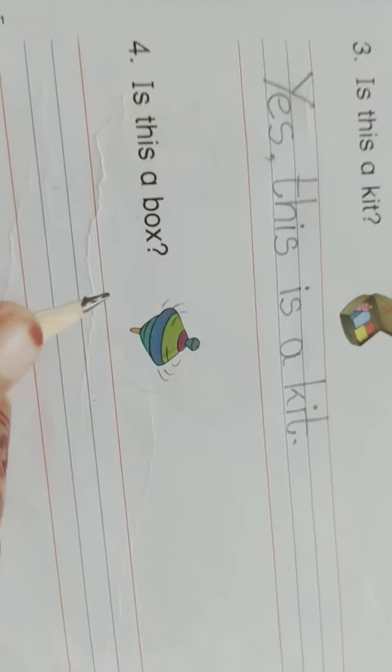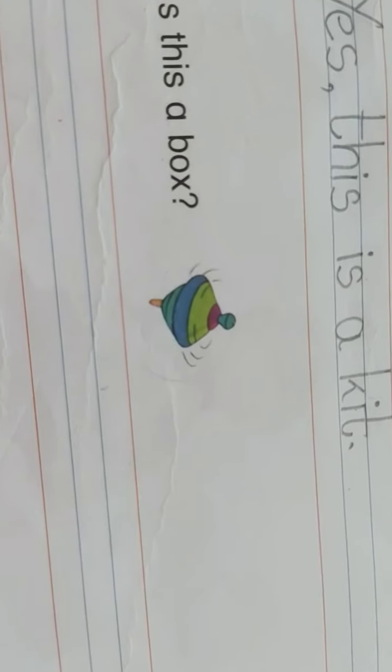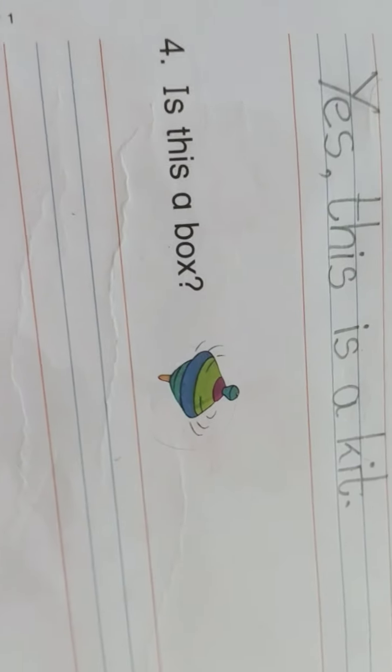Next, is this a box? Is this a box, students? No. Then what is it? It is a top. No, this is a top. You have to write here, no. N-O, no.